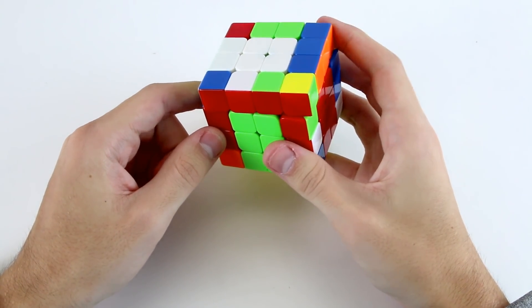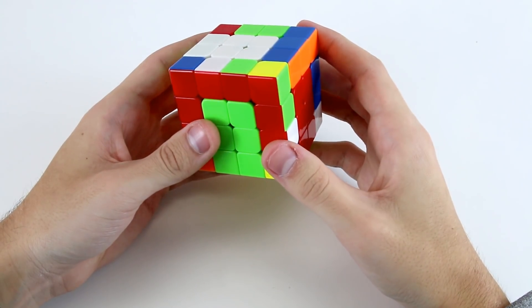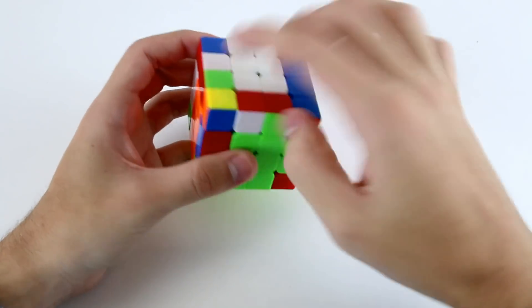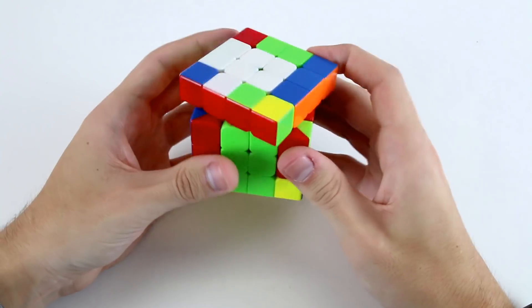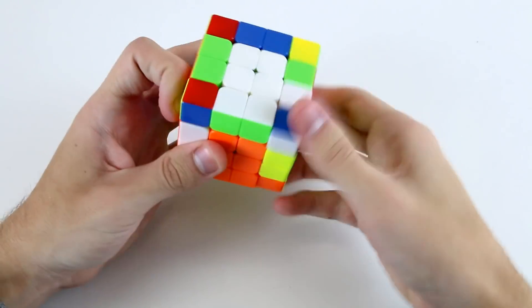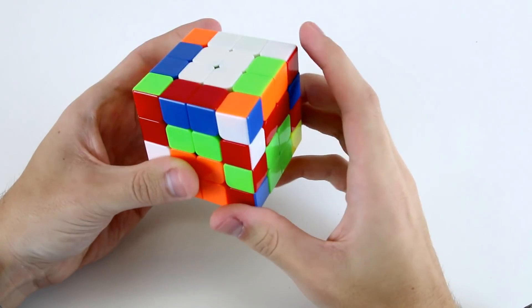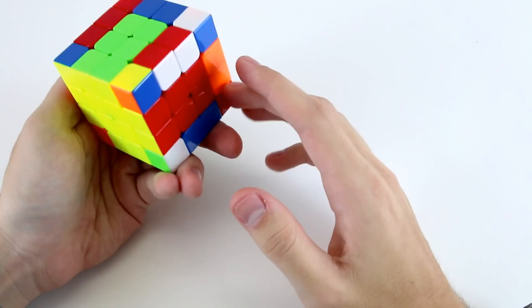Now there's a few different options that we can do for this last pair. I can either take this out to the top and do a last two edge algorithm or I can insert like that with a rotation slice flip and then slice back and now I've done my cross centers and edges.